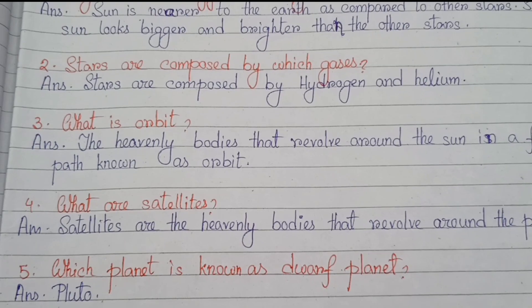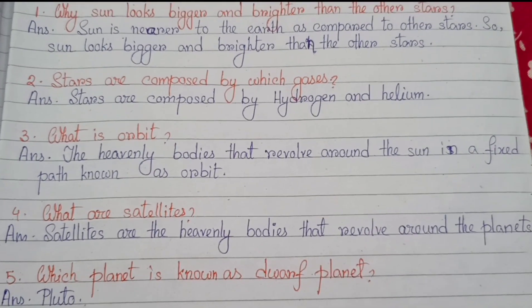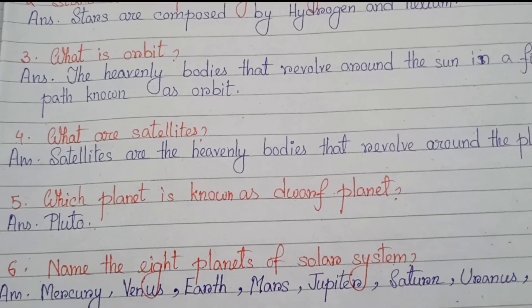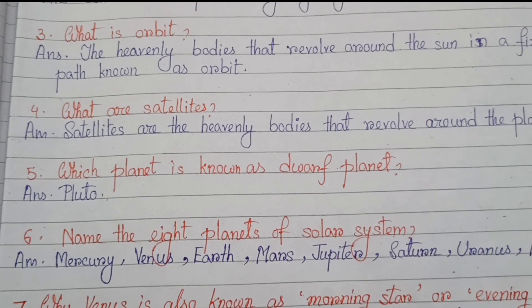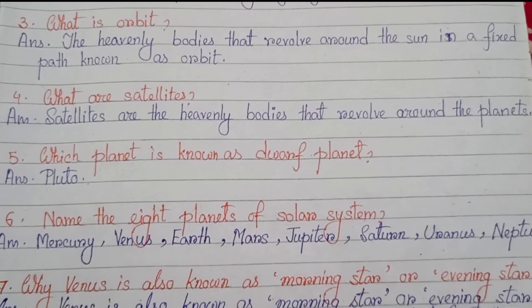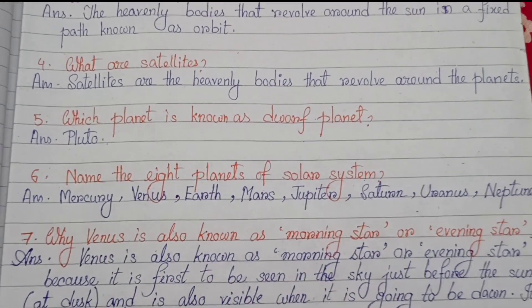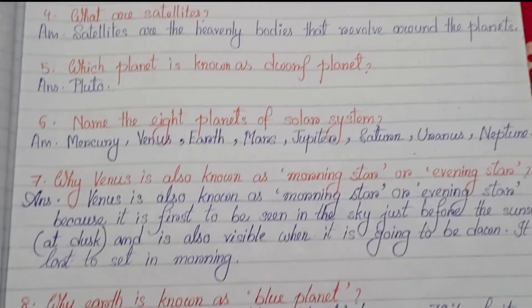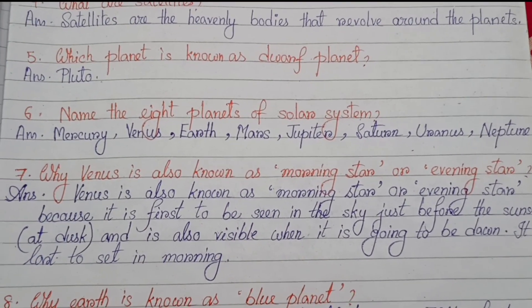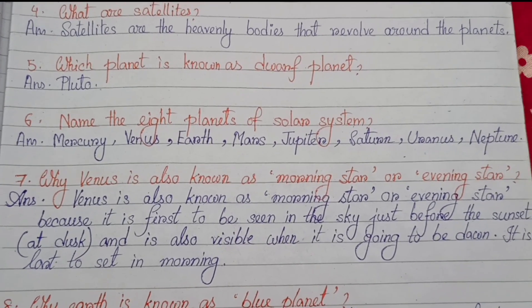Number two: Stars are composed of which gases? Stars are composed of hydrogen and helium. Number three: What is an orbit? The fixed path in which heavenly bodies revolve around the sun is known as an orbit. Number four: What are satellites? Satellites are the heavenly bodies that revolve around the planets.